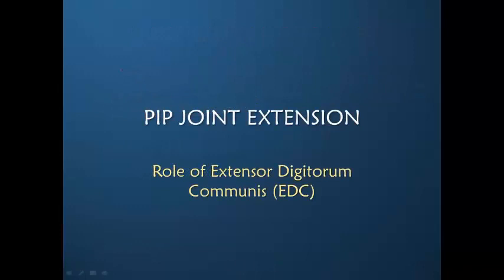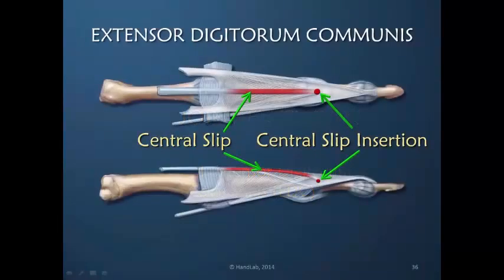Now let's look specifically at the extensor digitorum communis, mainly because one of the ideas I'm putting forth is that we can harness the extensor digitorum communis to be more powerful at the PIP joint. The central slip is the main central portion of the dorsal apparatus — it is not a separate tendon. It is part of the tissues and it ends just distal to the PIP, inserting into the base of the middle phalanx.